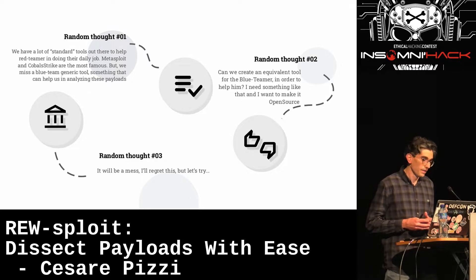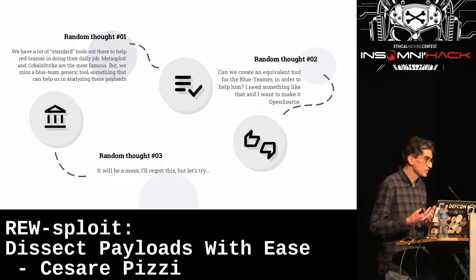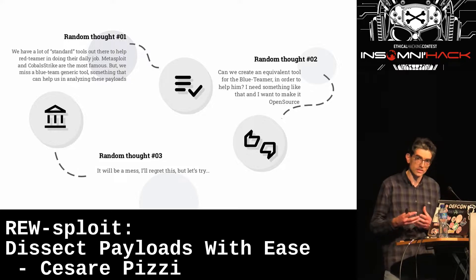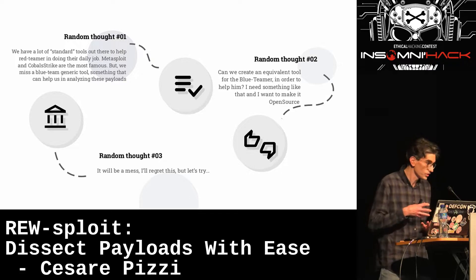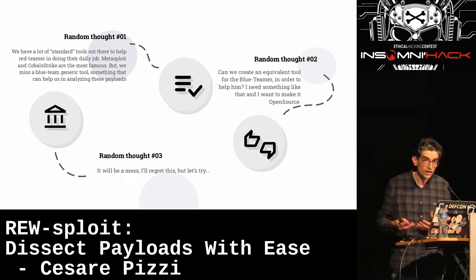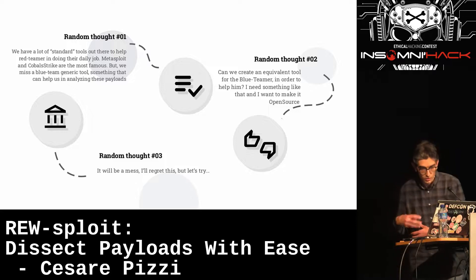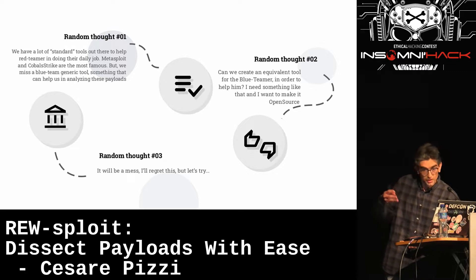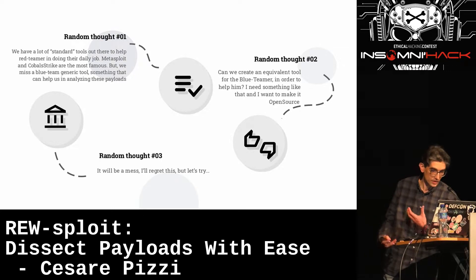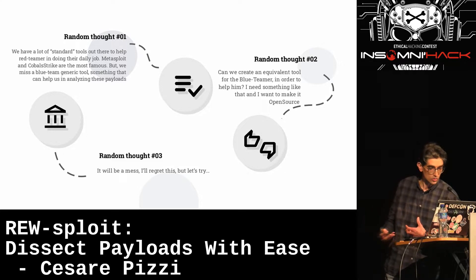These tools are so well done that even real attackers are using them, and that's an issue in some cases. What I realized is that I don't have a counterpart — I don't have a tool that allows me to review those kinds of payloads and tricks used by these frameworks to help me speed up analysis at least as much as these tools speed up the attacker. So I decided to build a tool to reverse what Metasploit and Cobalt Strike are doing.